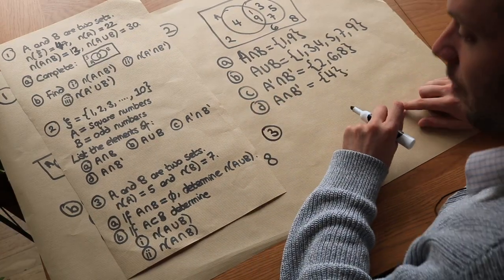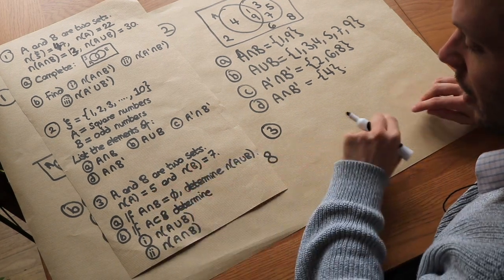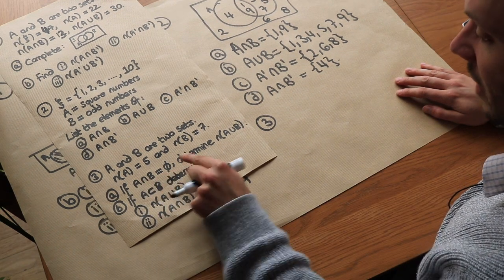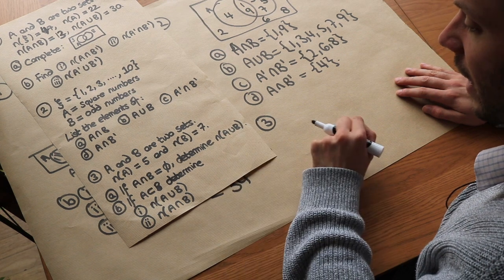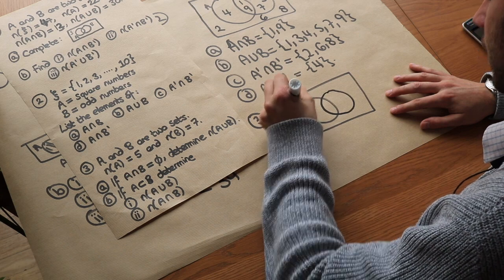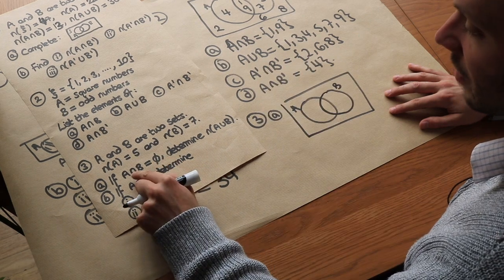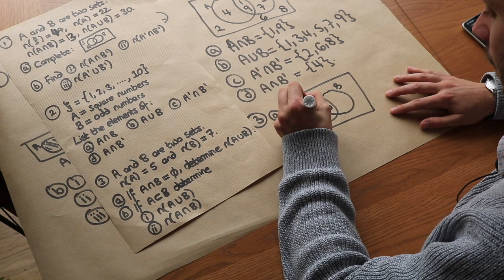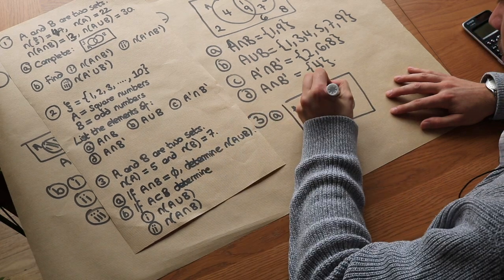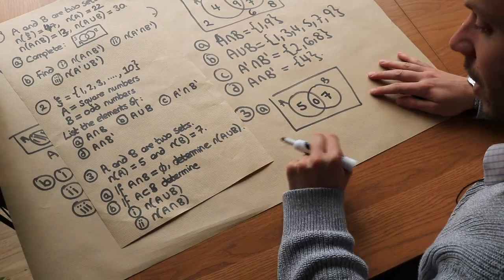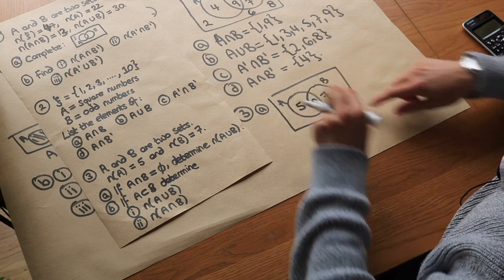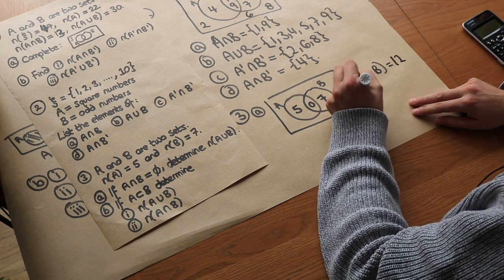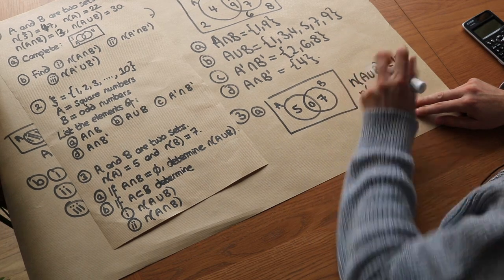Question 3: A and B are two sets with N(A) = 5 and N(B) = 7. Part A: if A ∩ B = ∅, determine N(A ∪ B). Drawing the Venn diagram, if nothing is in A and B, the overlap is 0. We put 5 in A only and 7 in B only. So N(A ∪ B) is just 5 + 7 = 12. And N(A ∩ B) = 0.